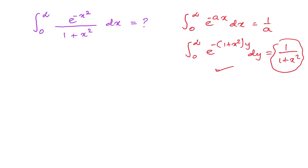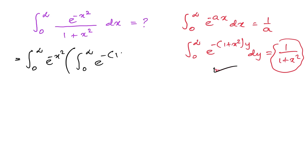Now, instead of 1 over (1 plus x squared), we can use this integral representation. So we write the integral from 0 to infinity of e to the minus x squared, and replace 1 over (1 plus x squared) with the integral from 0 to infinity of e to the minus (1 plus x squared) times y dy, all times dx.